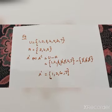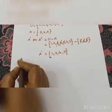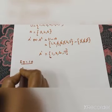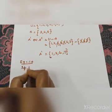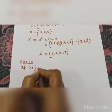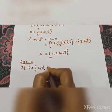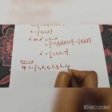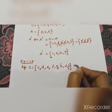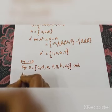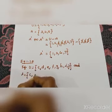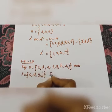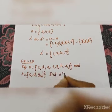Let's do example 1.10. If U is equal to {C, D, E, F, G, H, I, J} and A is equal to {C, D, G, J}, find A dash.